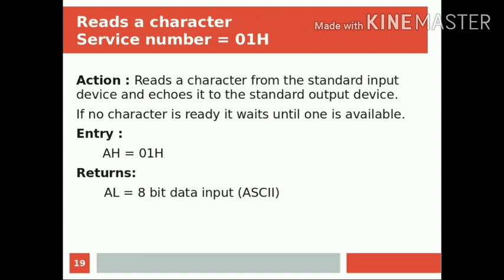Another service is to read a single character from the keyboard. The service number is 01H. It reads a single character from the standard input device and echoes it to the standard output device. If no character is ready, it will wait until one is available. The entry requires AH to be set to 01H with no other input requirements. After executing INT 21H, the AL register will contain the ASCII value corresponding to the character pressed on the keyboard.